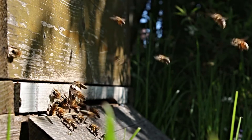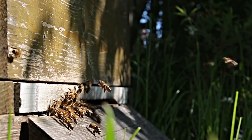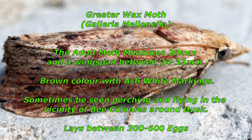In order to control wax moth infestation, it's important to recognize them and understand their life cycle so appropriate action may be taken. The greater wax moth adult has a length of about 20 millimeters and a wingspan between 24 and 33 millimeters. It is brown in color with white ash markings. When seen in a hive, it makes short runs or flights to darkness, and can sometimes be seen purging and flying near bee colonies at dusk, usually entering hives at that time.